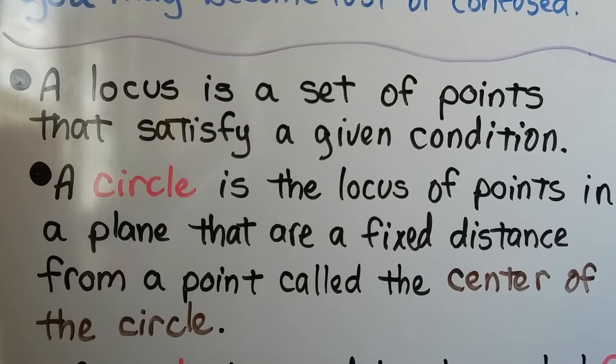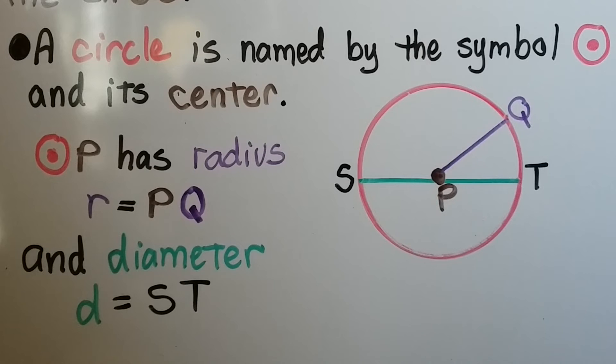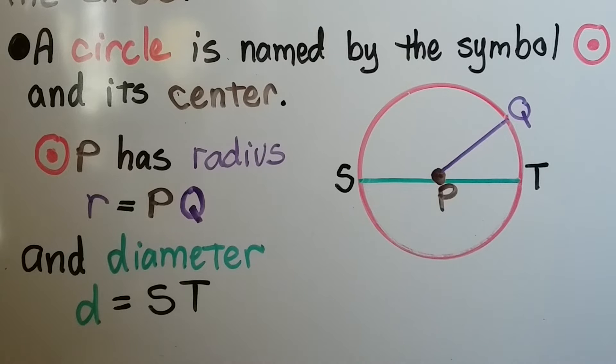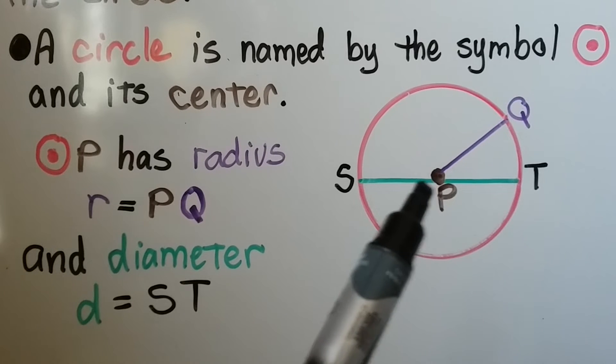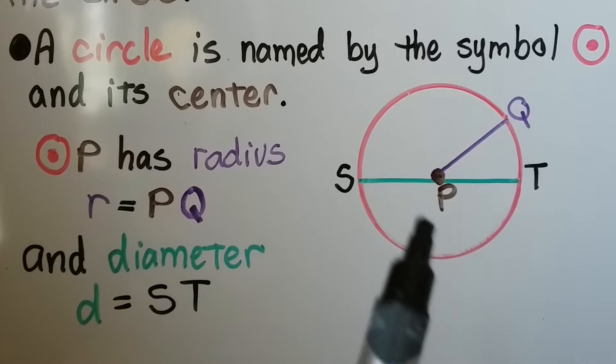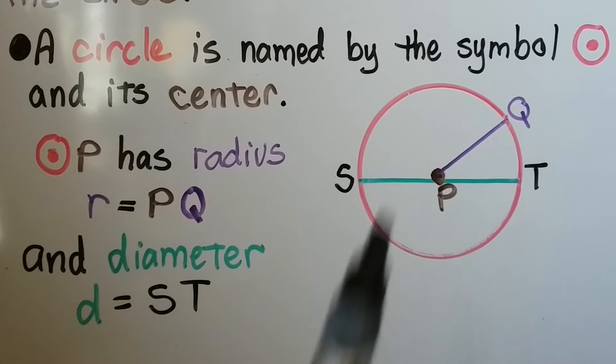A locus is a set of points that satisfy a given condition. A circle is the locus of points in a plane that are a fixed distance from a point called the center of the circle. A circle is named by this symbol and its center, so this is circle P. The center is point P. It has radius R equal to PQ, and the diameter D is ST all the way across.